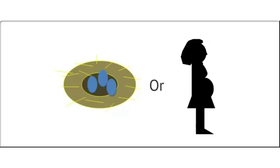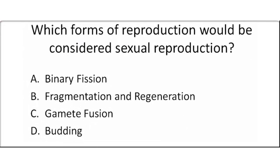Now that we have discussed the different methods of reproduction, let's answer some questions. Which form of reproduction would be considered sexual reproduction? Is that binary fission, fragmentation and regeneration, gamete fusion, or budding?